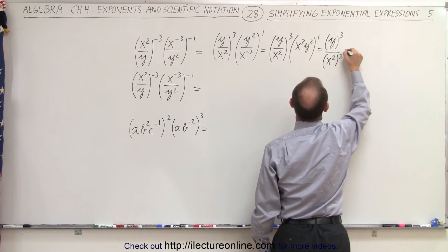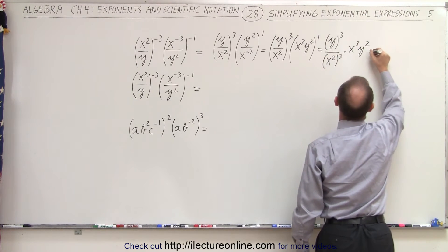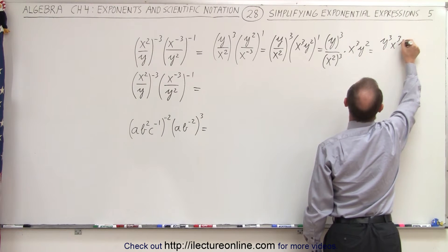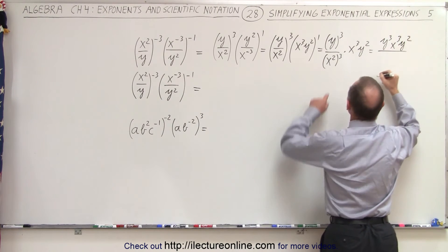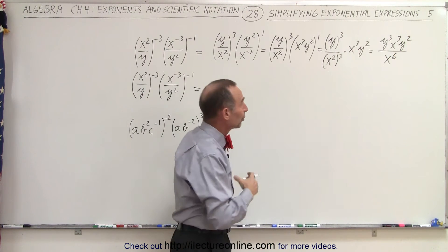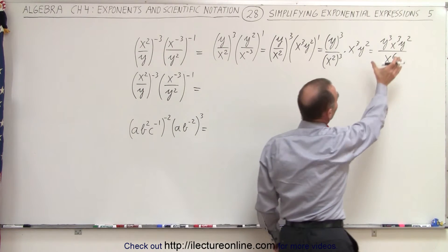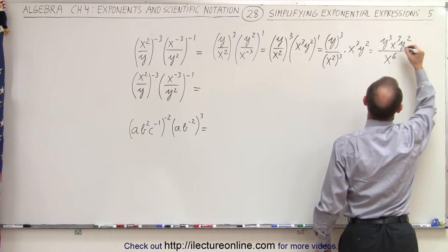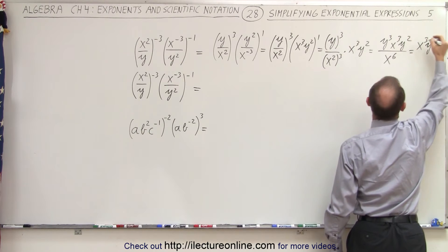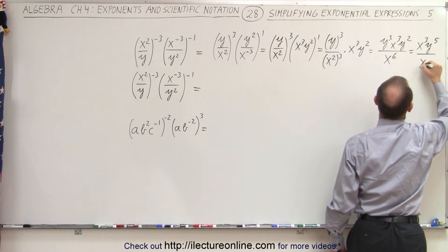So this becomes equal to y cubed, x cubed, y squared in the numerator, divided by x to the sixth power in the denominator. Because when we raise an exponent to an exponent, we multiply. And then we can combine the y terms. So we have x cubed, y to the 2 plus 3 power. When we multiply and the bases are the same, we add exponents, divided by x to the sixth power.